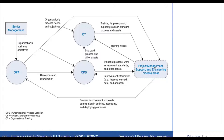Projects tailor the organization's set of standard processes to create their defined processes. The other assets support tailoring as well as implementation of the defined process. The Organizational Training process area identifies the strategic training needs of the organization as well as the tactical training needs that are common across projects and support groups. Training is developed or obtained to build the skills required to perform the organization's standard processes, and includes documented plans, staff with appropriate knowledge, and mechanisms for measuring the effectiveness of the training program.